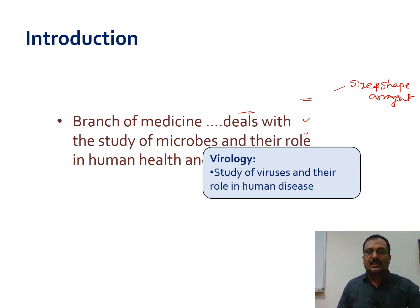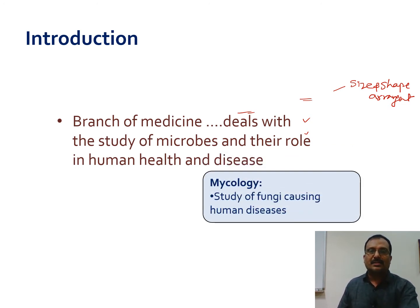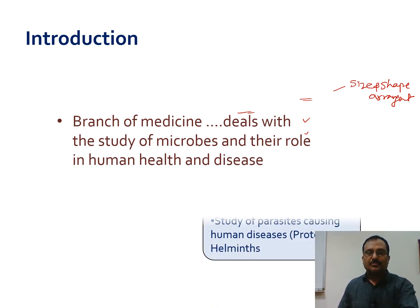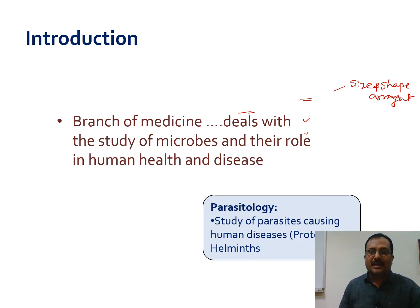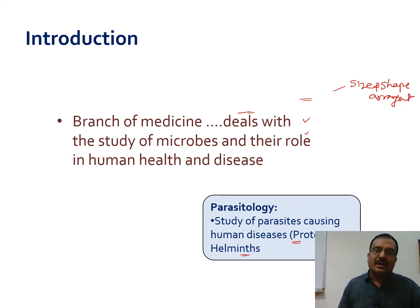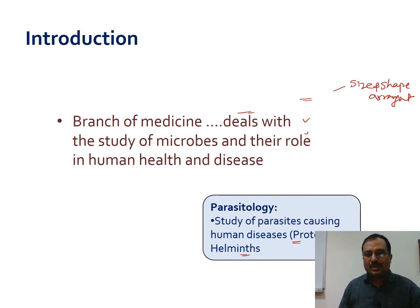Then virology covers the study of viruses and their role in human disease. Mycology covers the study of fungi causing human diseases. The last branch covers parasitology — especially how protozoans and helminths cause human disease. Each branch of microbiology discusses the various microorganisms responsible for human disease, particularly in medical microbiology.